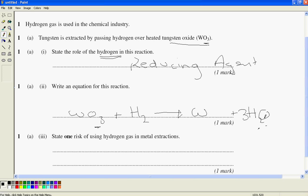If I've got three water molecules, I'm going to need six hydrogen atoms, which means three hydrogen molecules on this side.